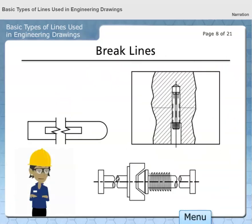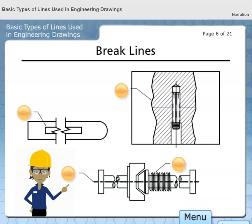Break lines represent an area of an object that has been removed for clarity or convenience. Short break lines appear as short lines within the object, and long break lines appear as longer lines that represent a larger portion of an object that was removed to shorten the view. Which one of these four lines best represents an example of a break line?